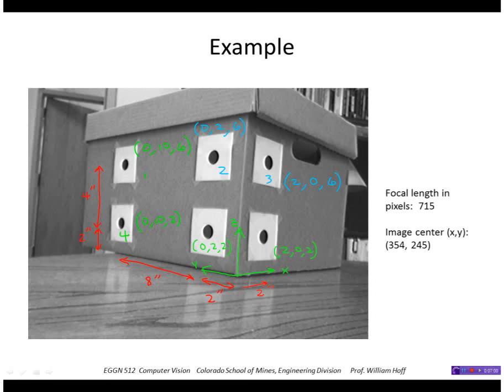Let's apply this to this example object that has six feature points. I've measured the 3D coordinates of the points with respect to a coordinate system attached to the object right here. These are in inches. So this point, for example, is at 2 inches in x, 0 in y, and 2 in z. This point is 2 in x, 0 in y, and 6 in z, and so forth. And I also have the intrinsic parameters of the camera: the focal length and image center.